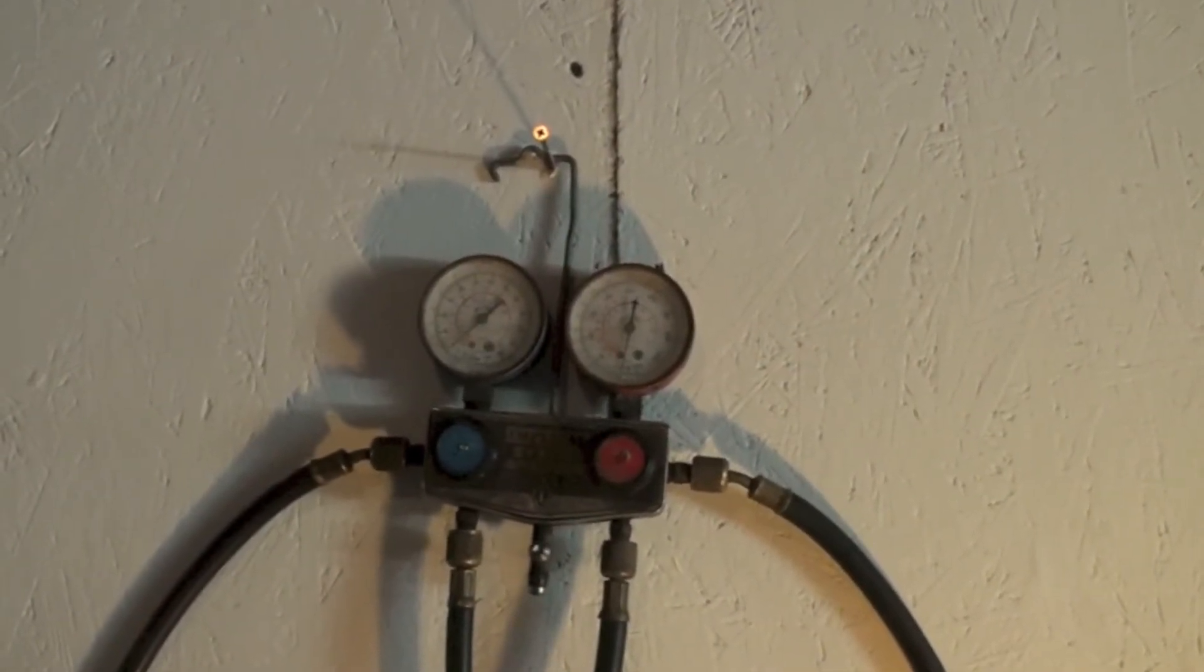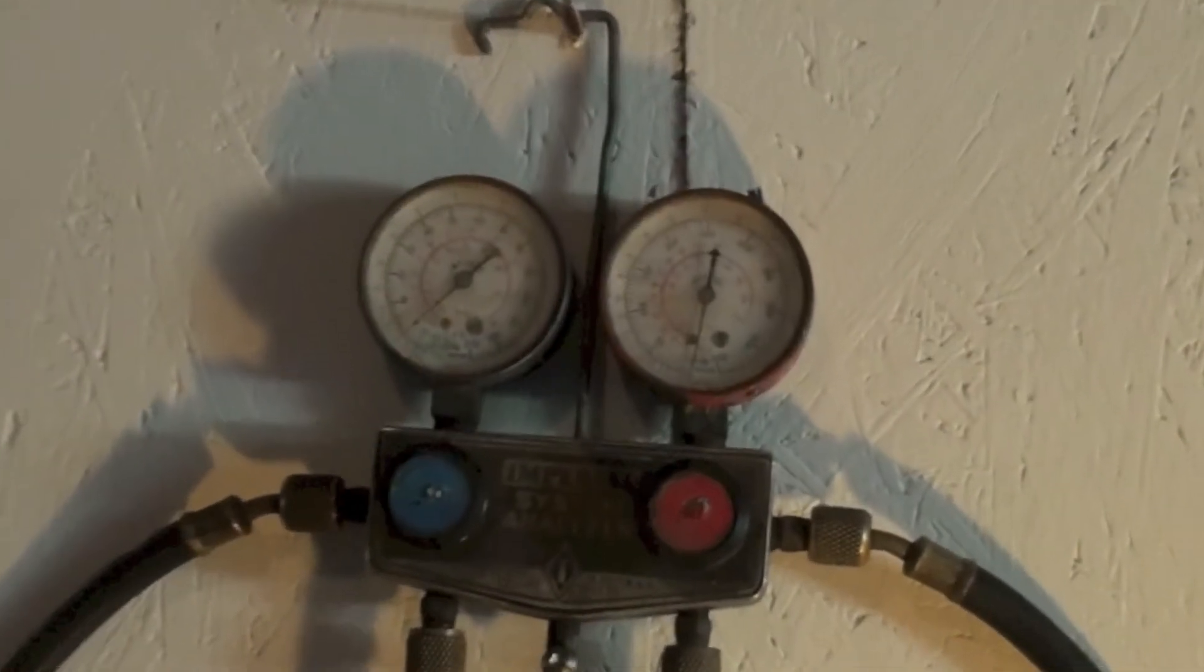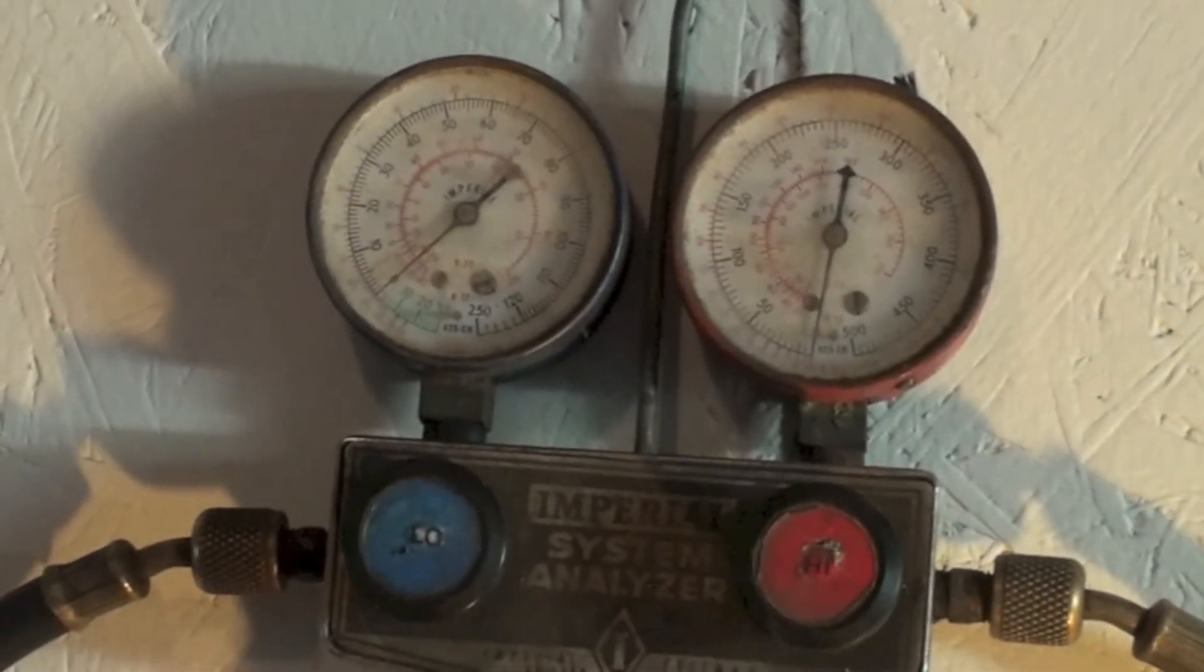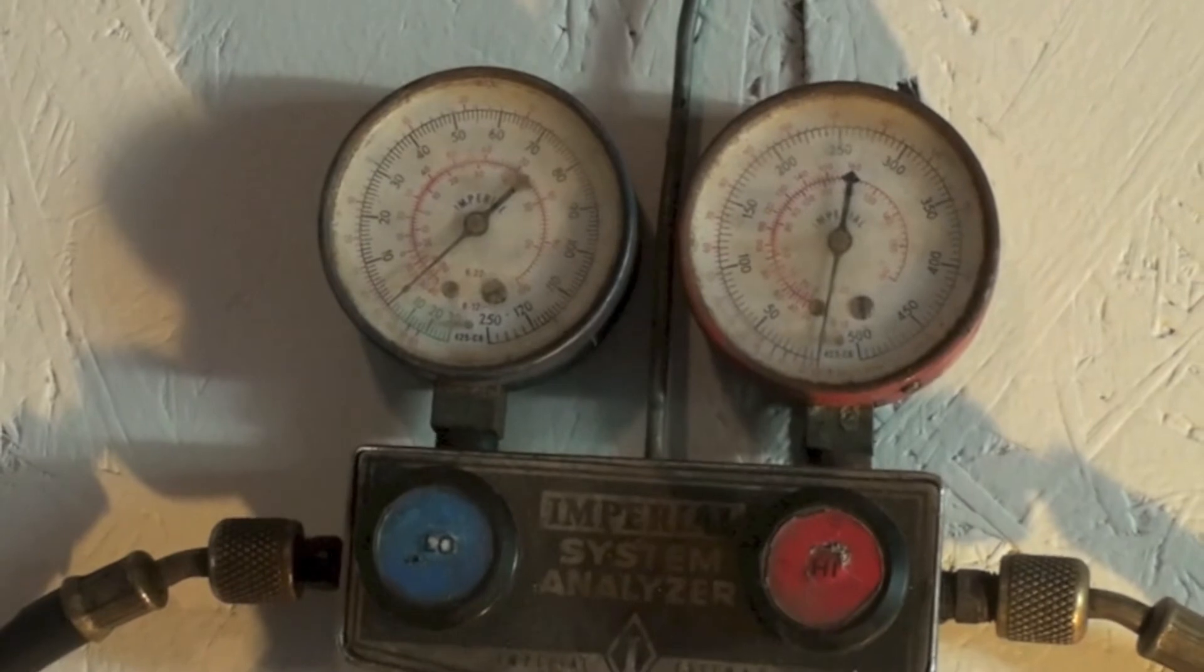We're going to try to check the hoses in this old Imperial Eastman. Now this thing, this was my father's gauge set. It's the only gauge set he ever had.